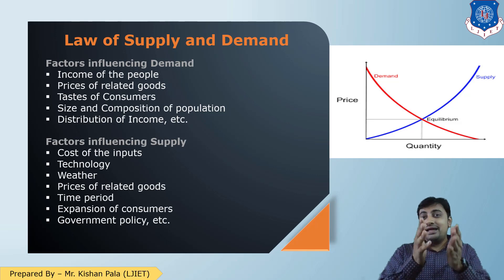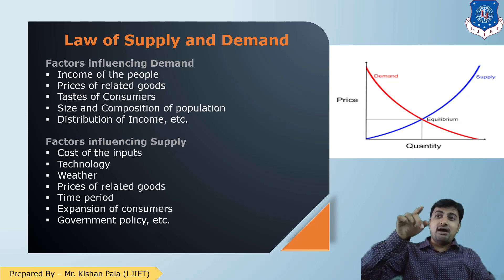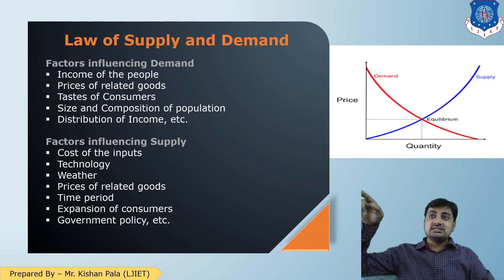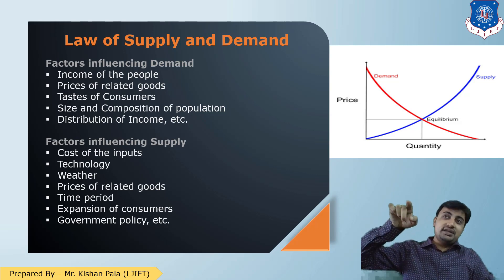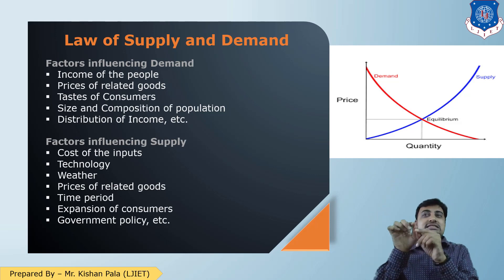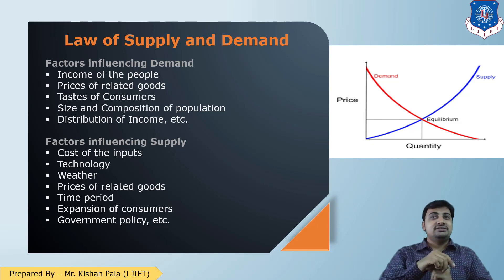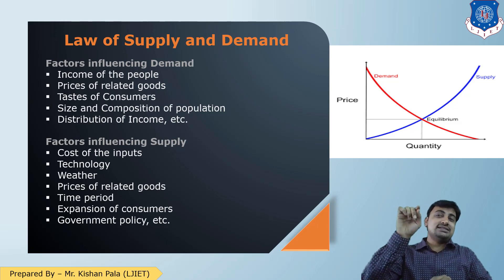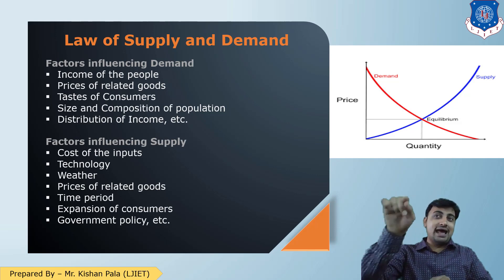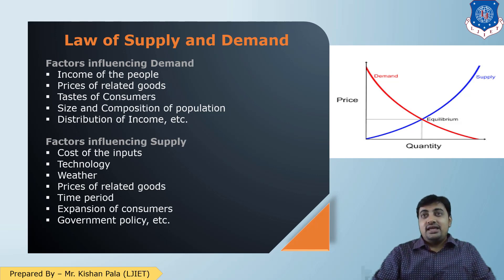The law of supply and demand can be explained with a chart. With increasing demand quantity, the price will be less, and with increasing quantity supplied, the price will be high. There is a particular point called equilibrium, which indicates the intersection of the demand and supply curves — at this point, the price and quantity are the same for both supply and demand. You can observe this with the graph.